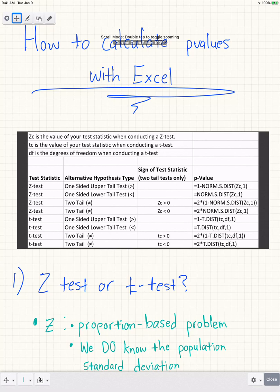But there are actually several different functions you can use in Microsoft Excel that help you find the p-value, and it's actually a lot simpler once you get used to it.